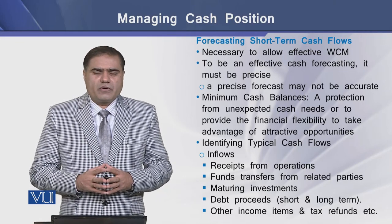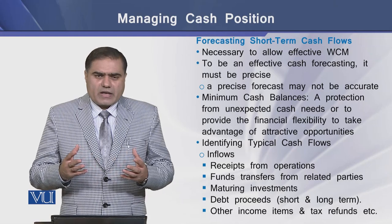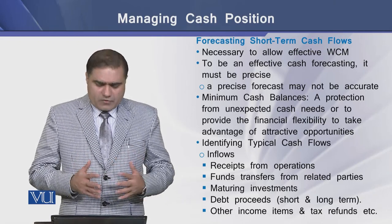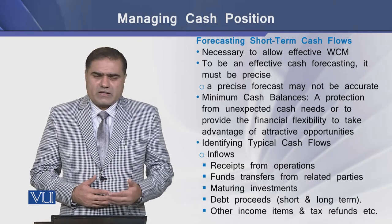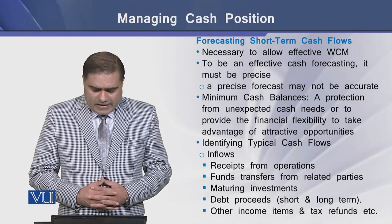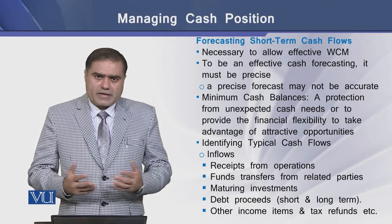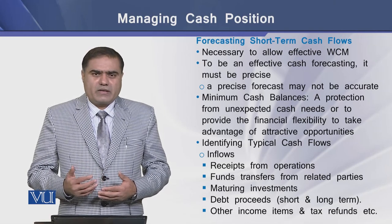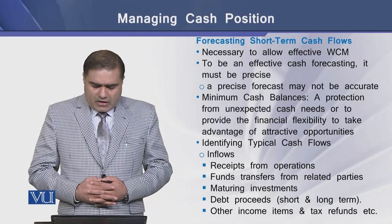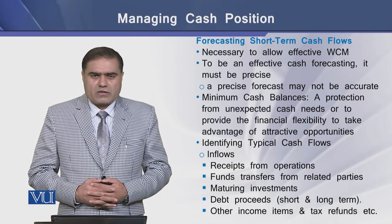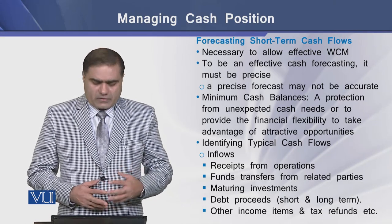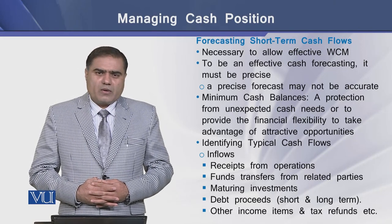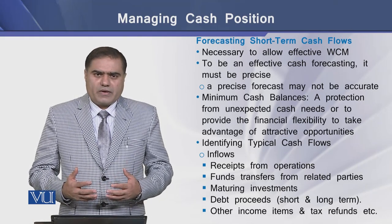While forecasting cash flows, firms have typical cash inflows and cash outflows. Cash inflows come from receipts from operations in the form of cash sales and collections from debtors, funds from related parties, maturity of the firm's investments realized as cash, debt proceeds from creditors, banks, or other financial institutions in the form of short and long-term funds, and other incomes like interest income, dividend income, or tax refunds from government authorities.